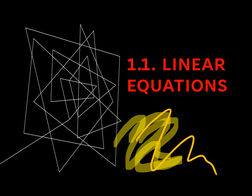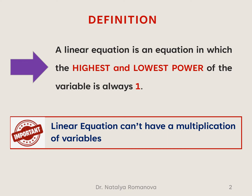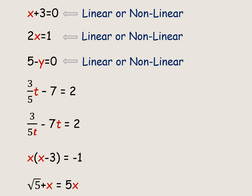This video presents a definition, standard form, and a couple of approaches to solve a linear equation. A linear equation is an equation in which the highest and lowest power of the variable is always 1. A linear equation cannot have a multiplication of variables. It is very important to be able to classify types of equations — for example, linear or nonlinear, quadratic, non-quadratic, rational, irrational — because every equation needs a specific way to find a solution.